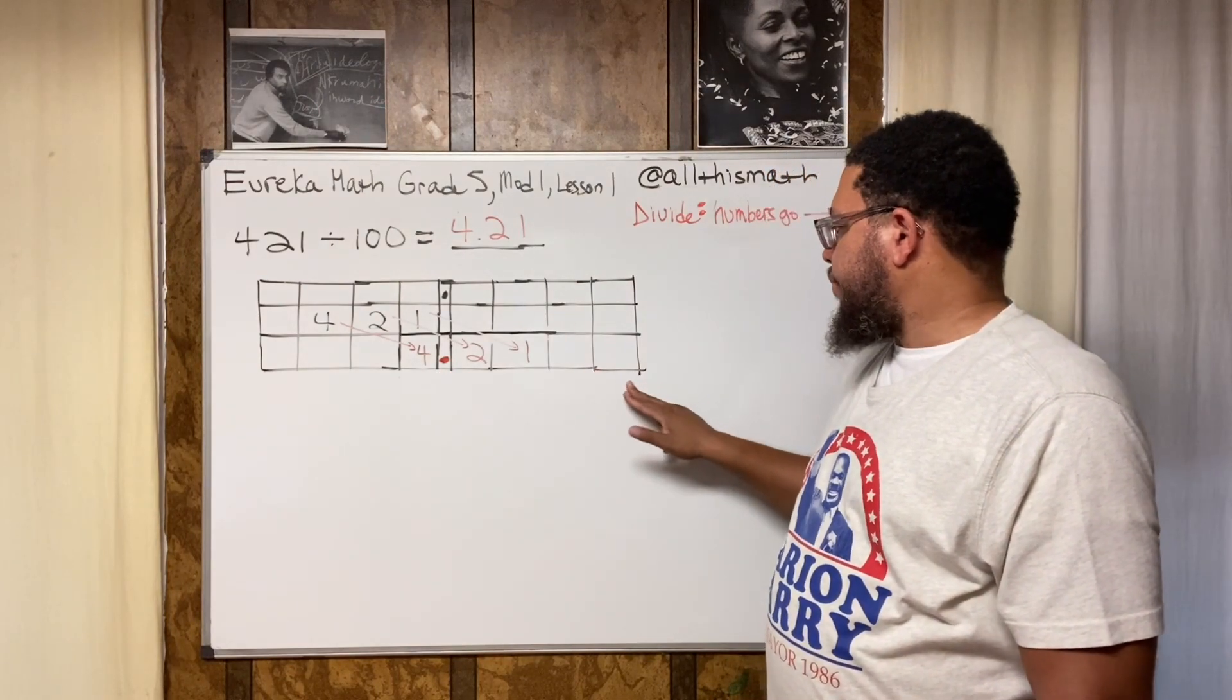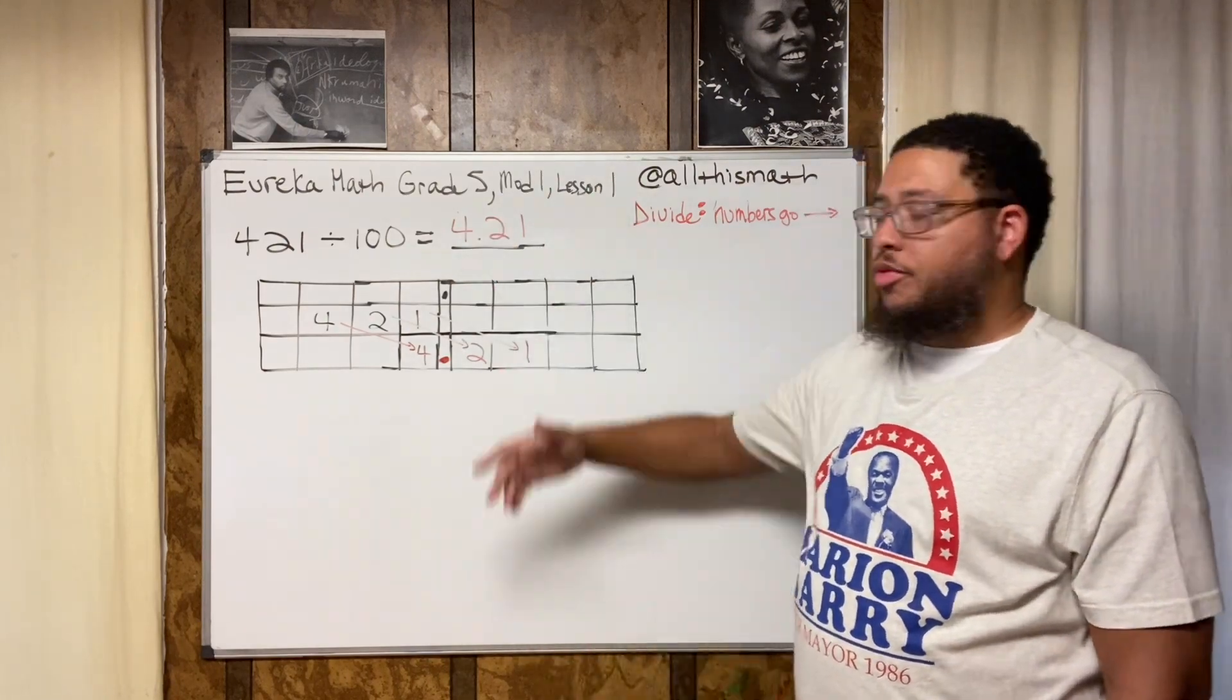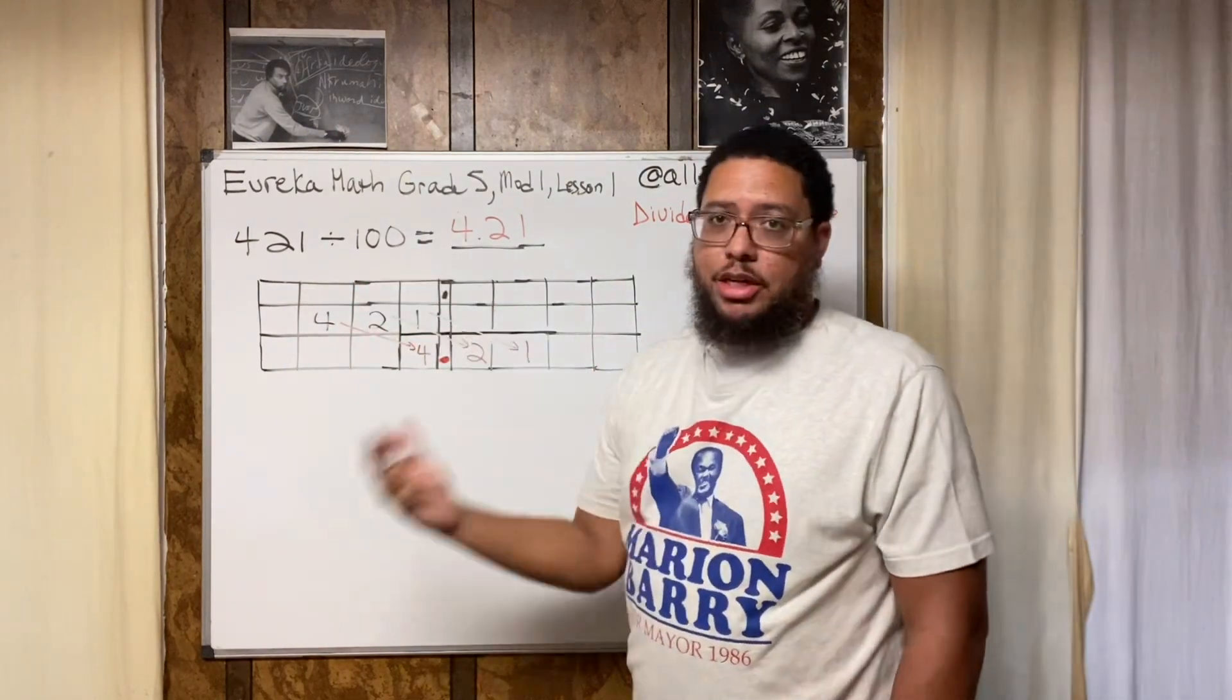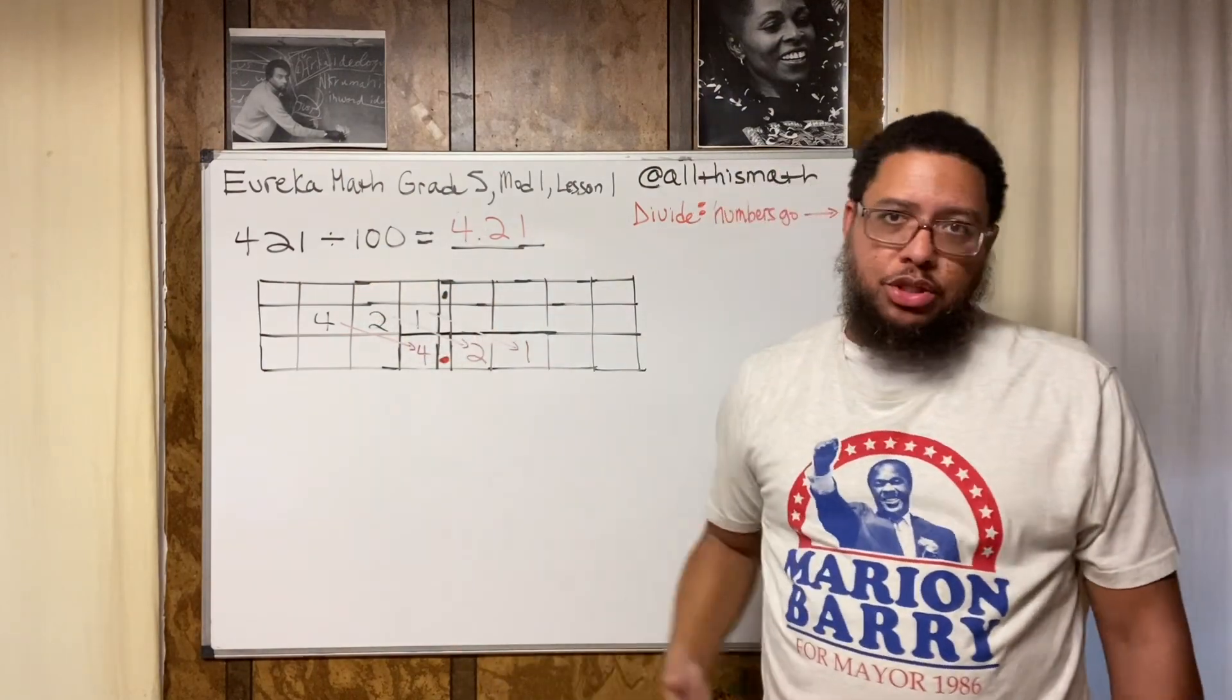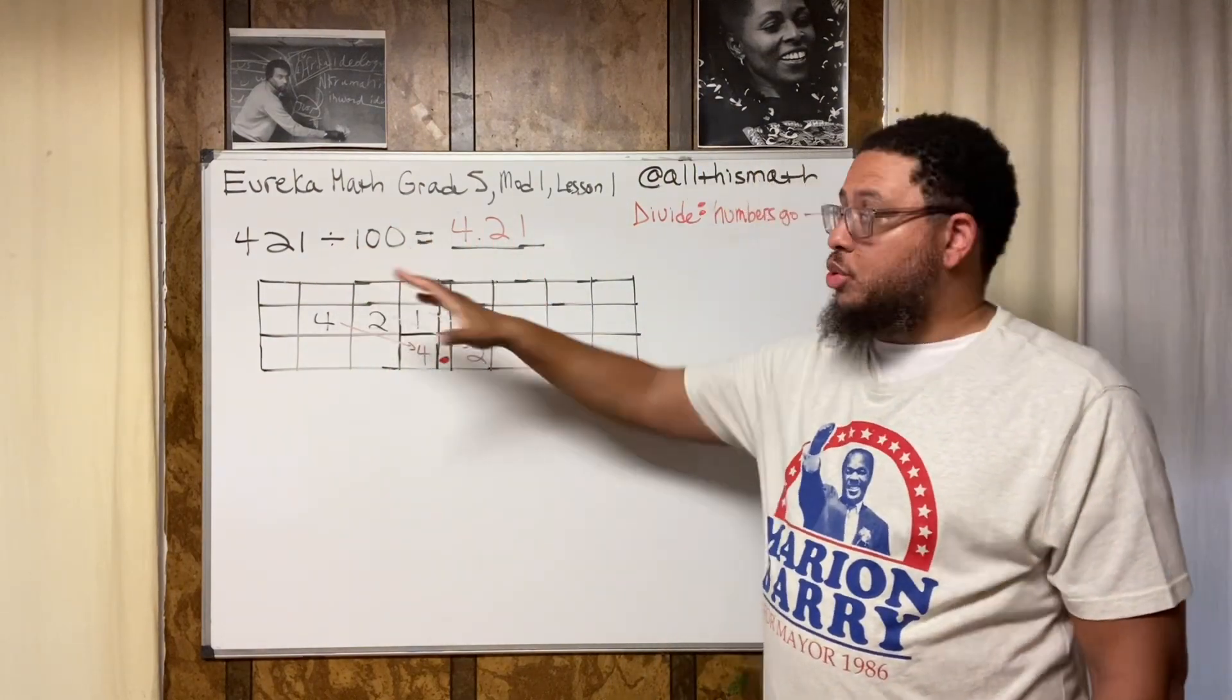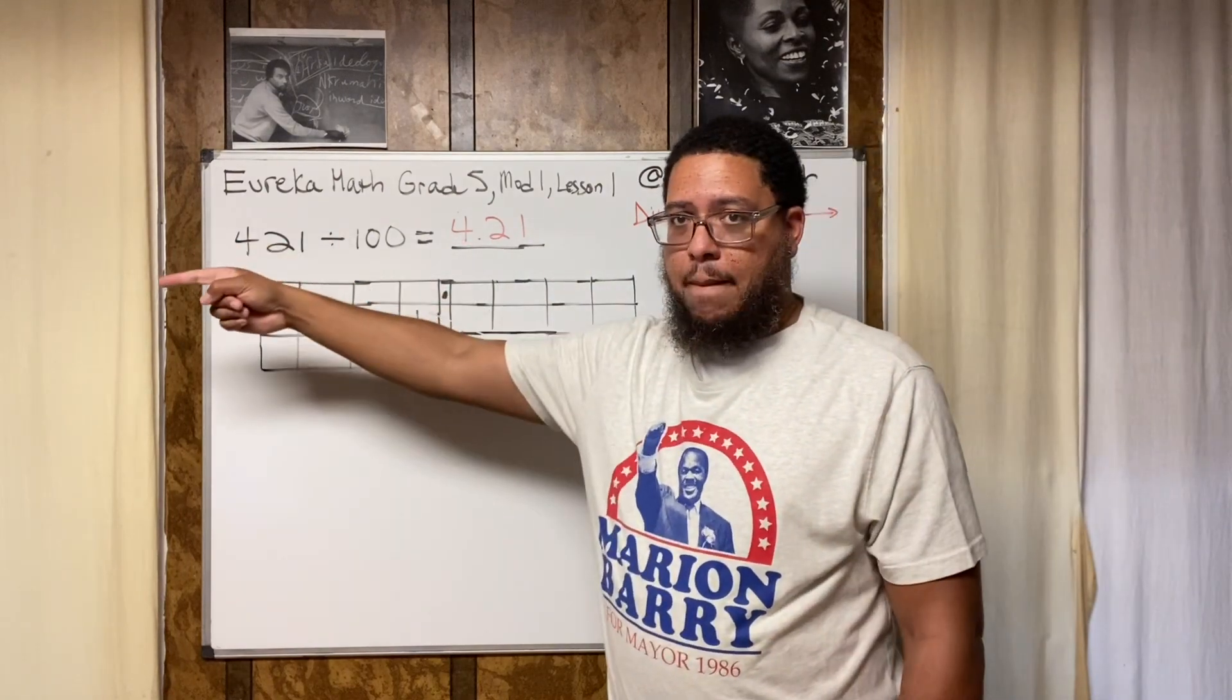Place value charts, Eureka Math fifth grade. Don't forget when you divide, the digits move to the right. How many spaces? It depends on how many zeros you got. However many zeros you got, that's how many spaces you move. You slide based on how many zeros you got in the number you're either dividing or multiplying by.